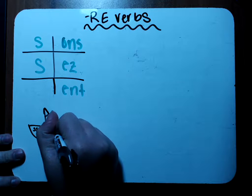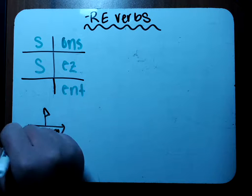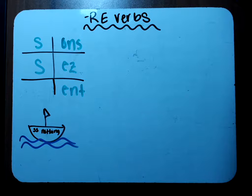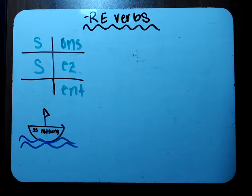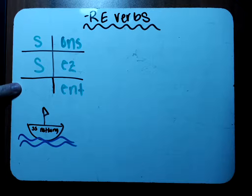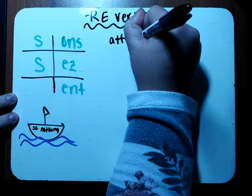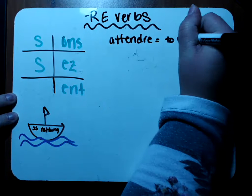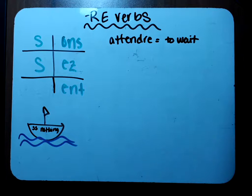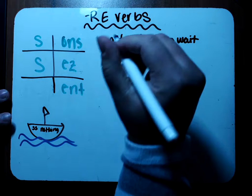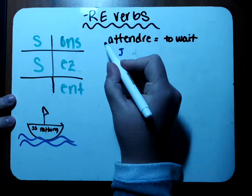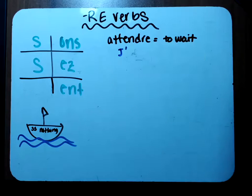The first verb is 'attendre,' and attendre is the verb to wait. Let's go subject by subject — let's say that I'm waiting. To say I'm waiting we have je. Because it starts with a vowel, we put the apostrophe: j'. Conjugate the verb — write your stem, take off that RE, and add on the new ending S. So j'attends means 'I wait' or 'I'm waiting.'